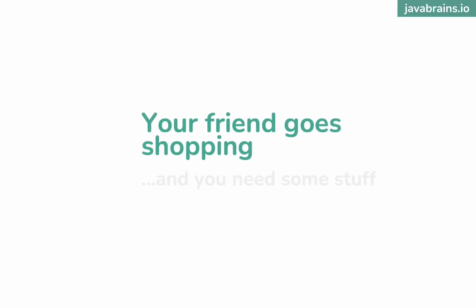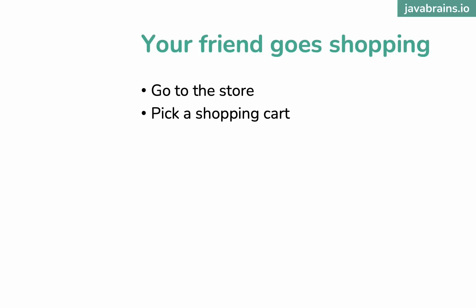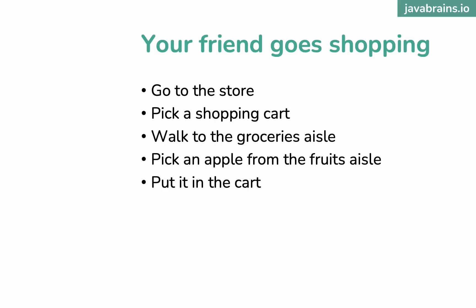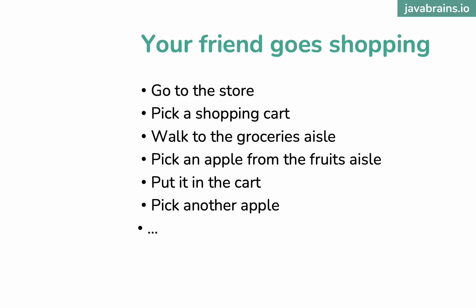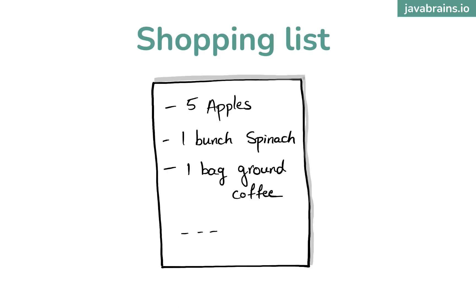Let's say your friend is going shopping and you want them to get you some groceries — some apples, some spinach, and some ground coffee. How do you communicate this? Do you say, 'Go to the grocery store, pick up a shopping cart, walk to the grocery aisle, pick an apple from the fruits aisle, put it in the cart...'? No, we don't do that. What you do is give your friend a shopping list. You don't tell them the steps — you just tell them what items you need. This is the declarative style of coding: you specify the expected final state, not the individual steps.